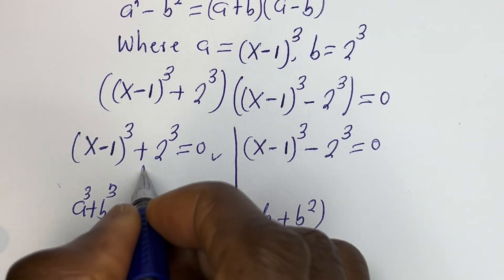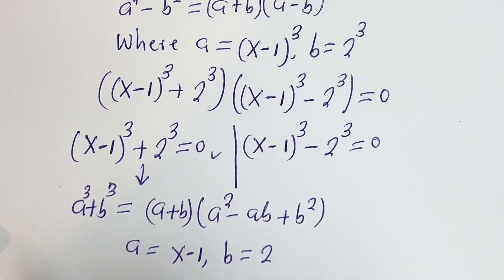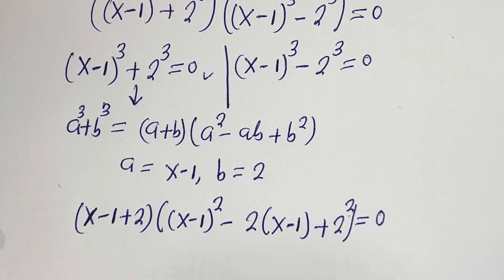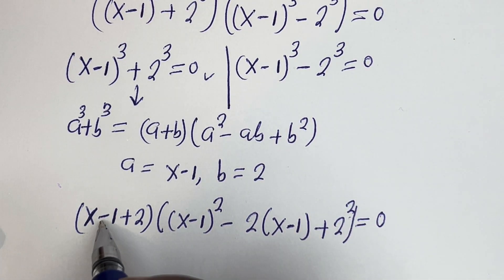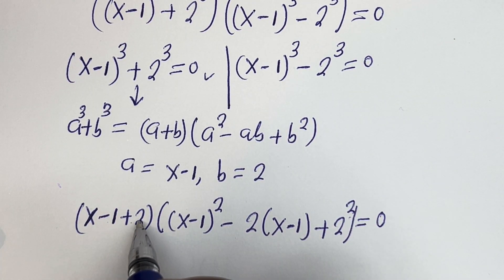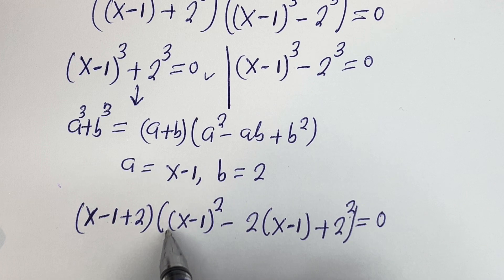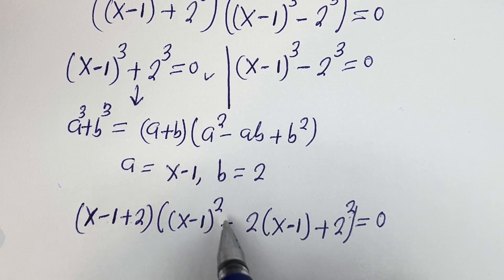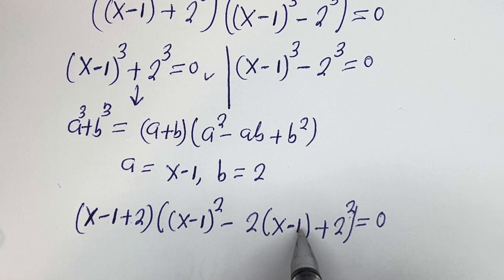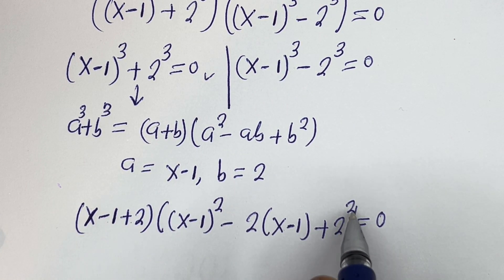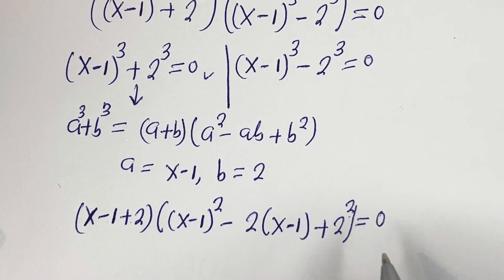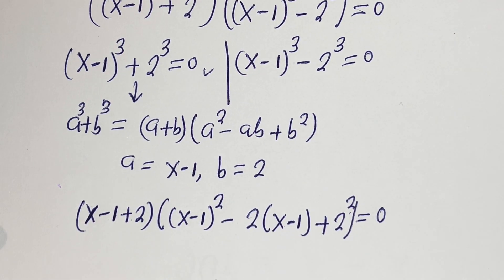Applying the sum of cubes formula, we get: (x minus 1 plus 2) times ((x minus 1) squared minus 2(x minus 1) plus 2 squared) is equal to 0.